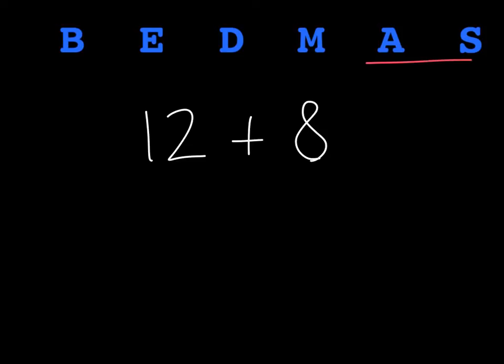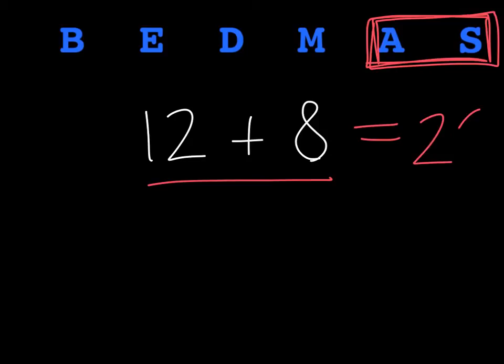Our final step is to look for any addition or subtraction we see. Once again, I do those in the order I see them. Not necessarily addition before subtraction. In this case, I only have addition. There is no more subtraction left in this equation. So my final answer is twelve plus eight equals twenty. And the answer to that very complex expression you saw at the beginning is twenty.